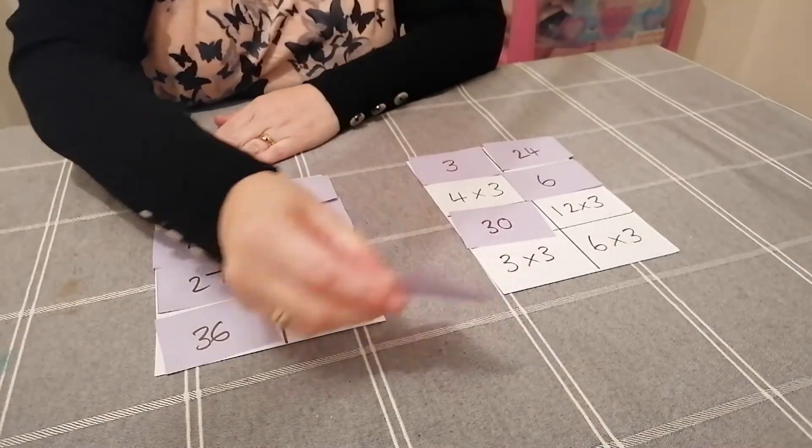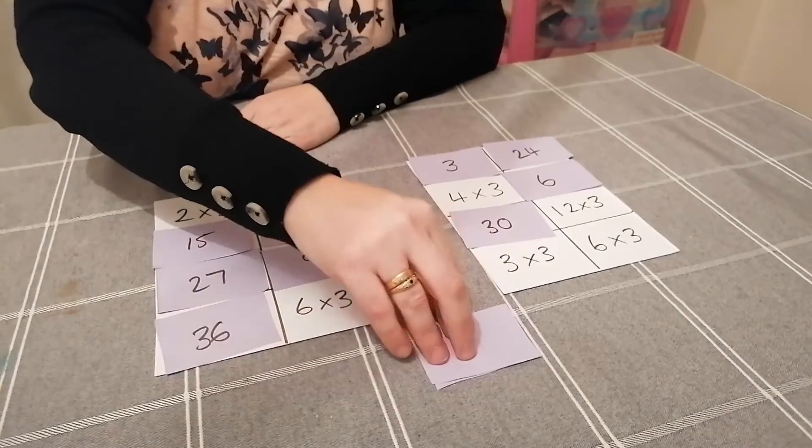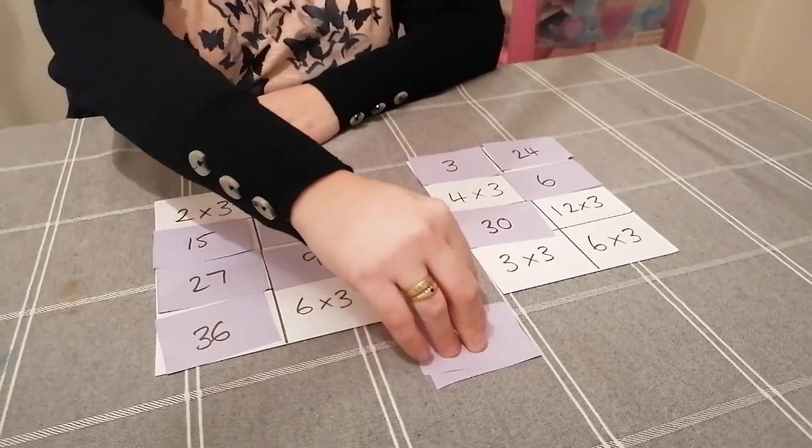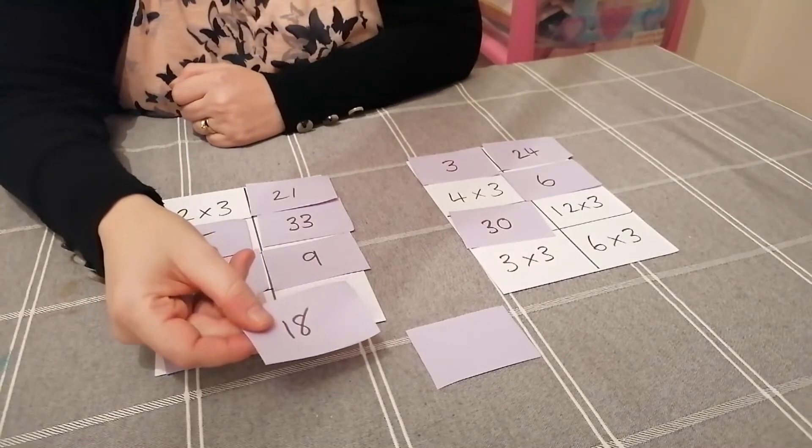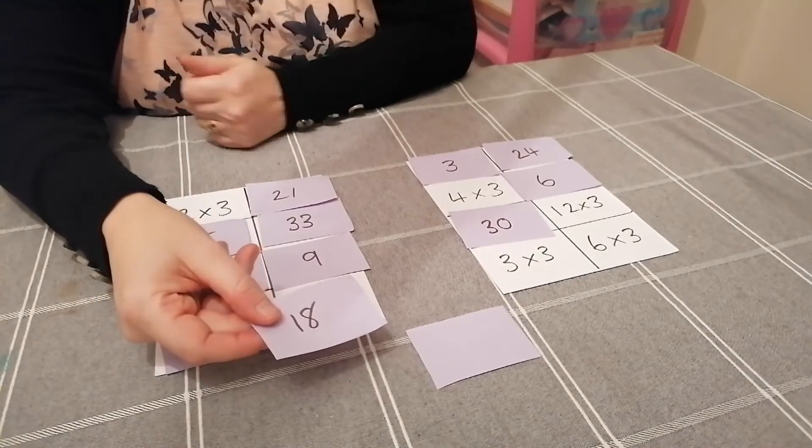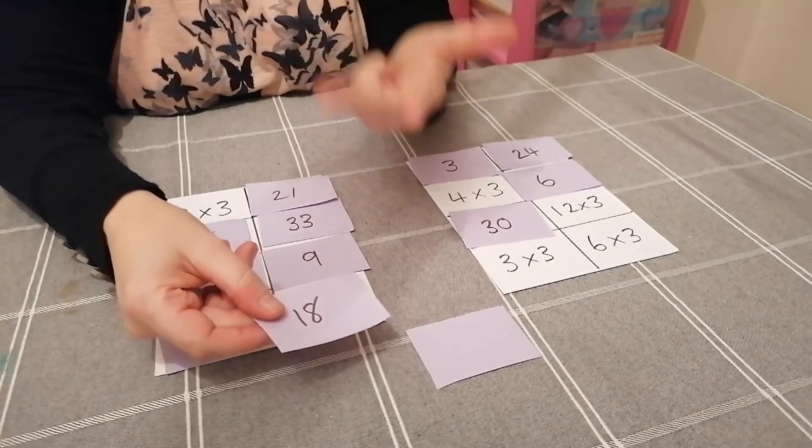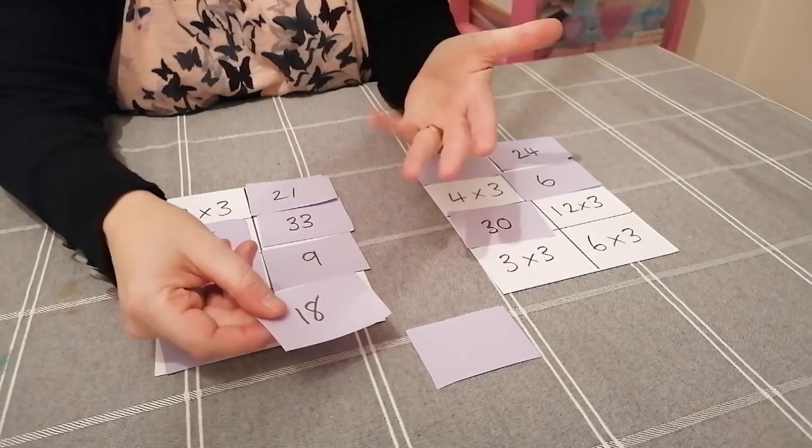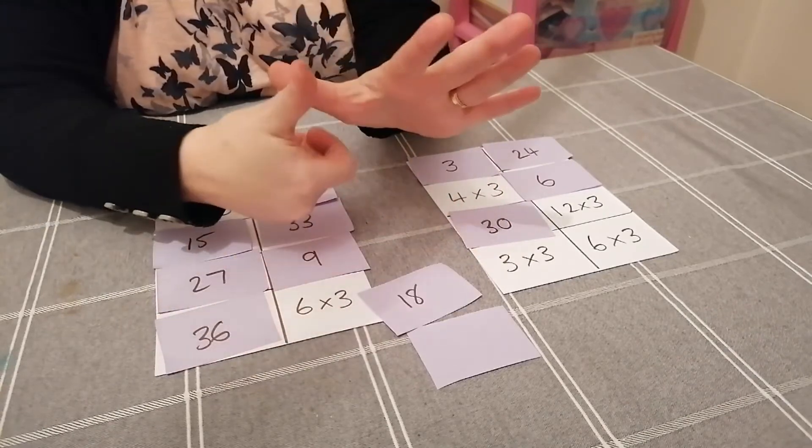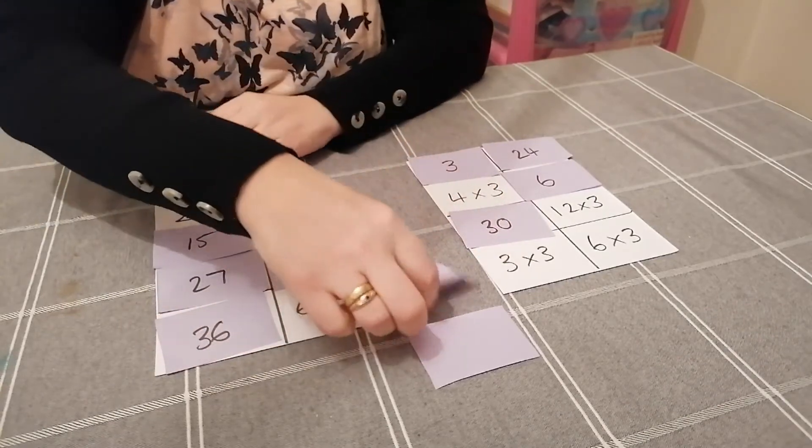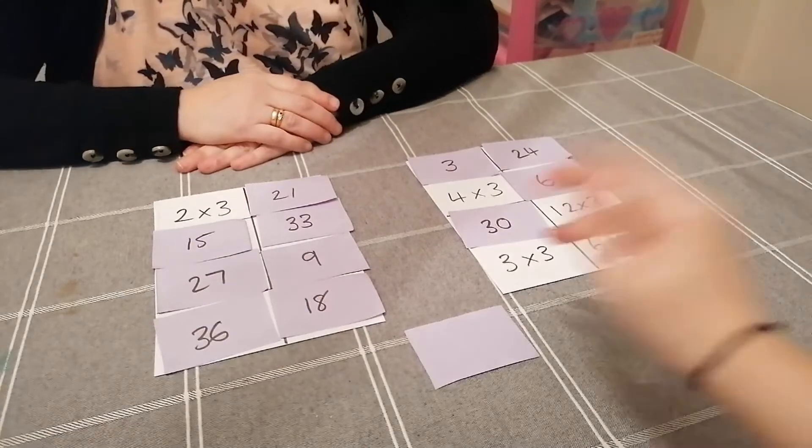So what we've done is the cards that we didn't win, we've turned back over and we're going to try again with those. My turn, 18. Try again. I worked it out before, it wasn't nine times three. So three, six, nine, twelve, fifteen, eighteen. And that's six lots of three. Yes, I win that one.